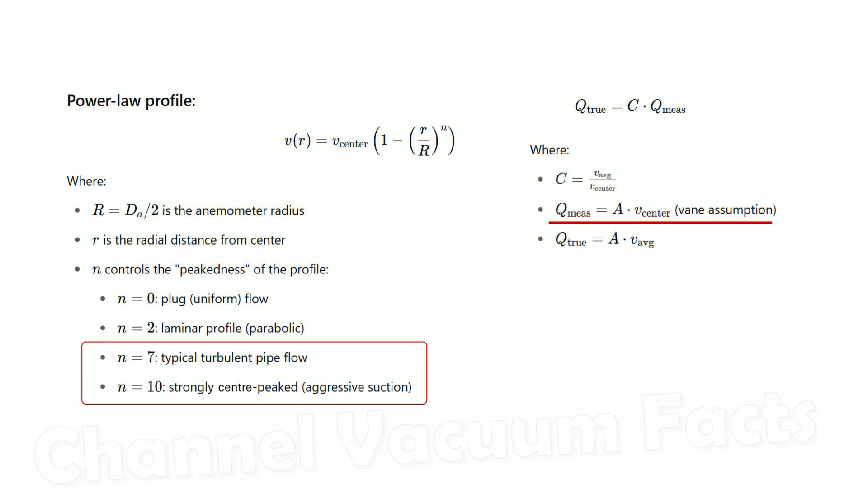The anemometer measures the center velocity and assumes this is the velocity across the whole vane, which it isn't in this setup. The true airflow requires the average velocity, which is determined by integrating the velocity profile over the whole cross-sectional area. This is fairly easy to do.